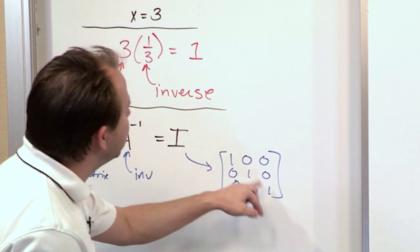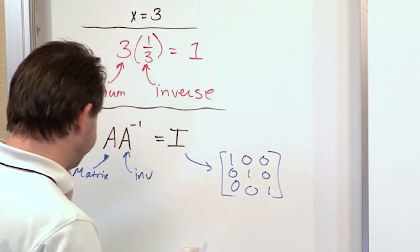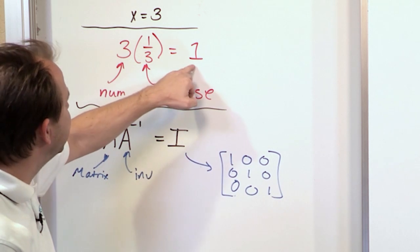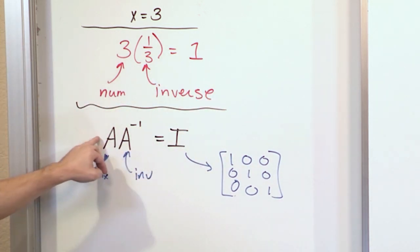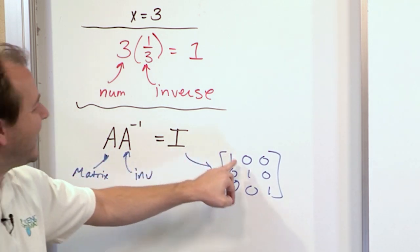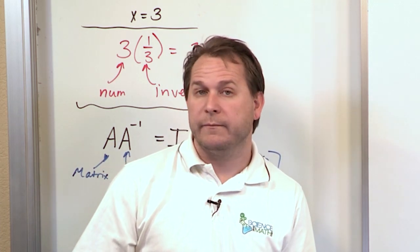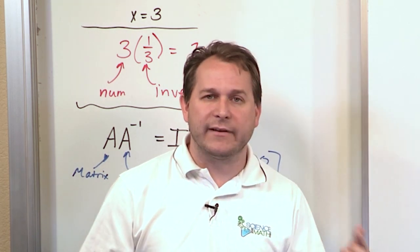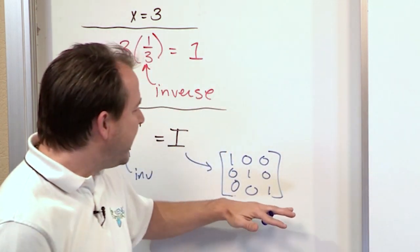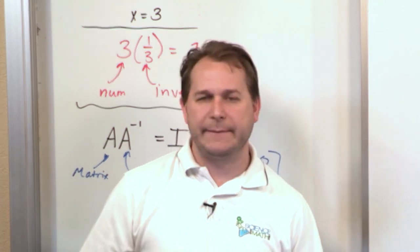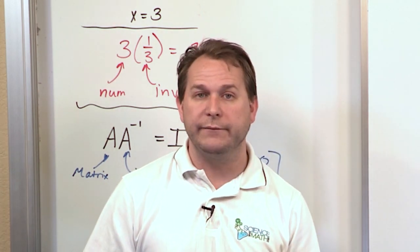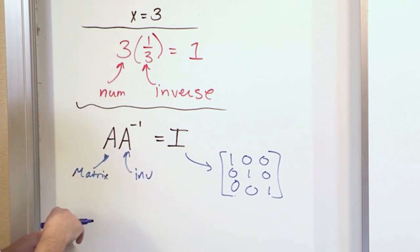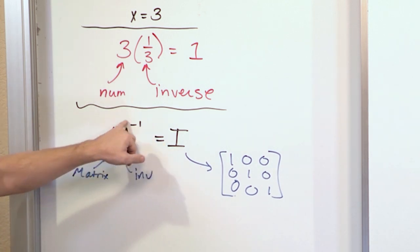An identity matrix is where you have ones along the diagonal and zeros everywhere else. You can see the direct extensibility from numbers to matrices. With numbers we find an inverse so that when we multiply we get a single number one. With matrices we find a matrix so that when we multiply it by the original matrix we get a diagonal array of ones with zeros everywhere else — the identity matrix. The identity matrix behaves like the number one, and the negative one notation just denotes the concept of inverse, not an actual power.